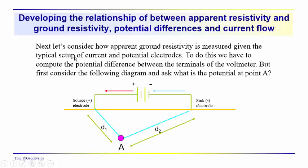The basic setup we have, as mentioned last time, includes a battery with positive and negative electrodes. The direction of current flow is considered to be the direction of flow of positive charges. In order to characterize the potential difference measured with a resistivity meter, we need to develop that relationship, starting by looking at the potential at an arbitrarily located point A, which is located a distance D1 from the source electrode and a distance D2 from the sink electrode.